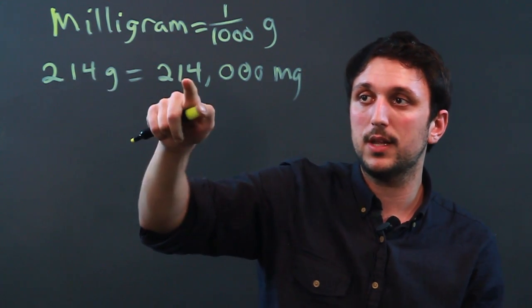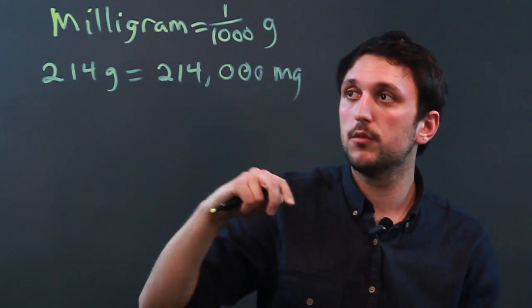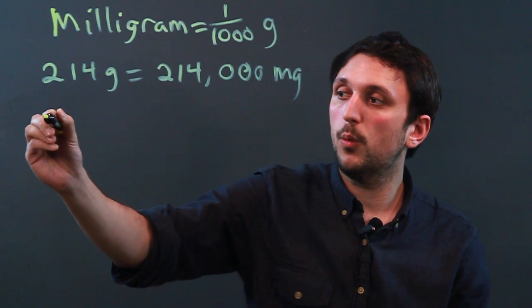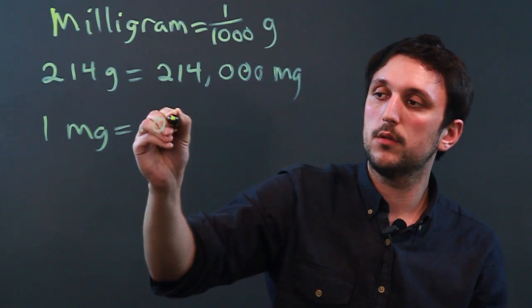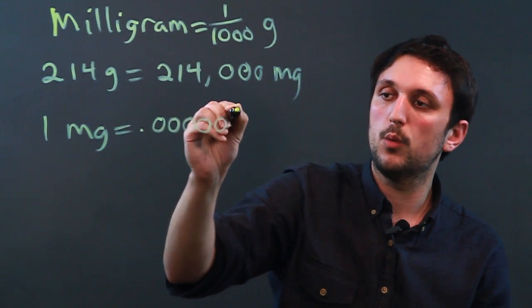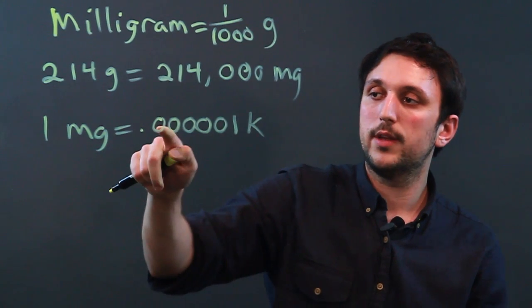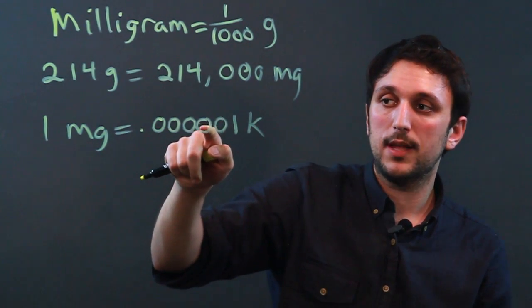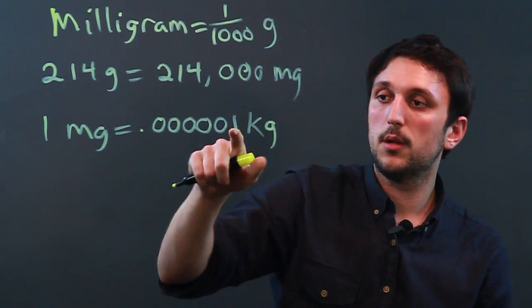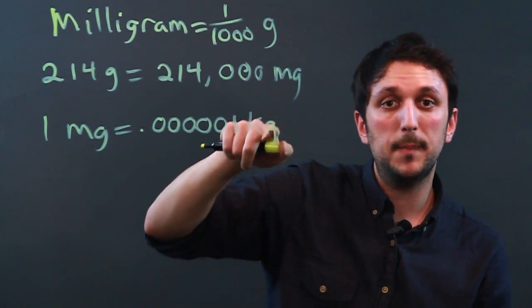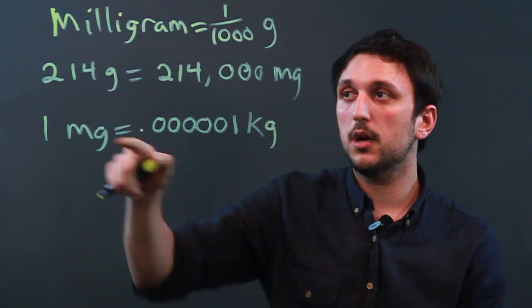So we have 214,000 milligrams. If we want kilograms, well one milligram equals .000001 kilogram - tens, hundreds, thousands, ten thousand, hundred thousand, millionth. So one milligram is one millionth of a kilogram because as we said,